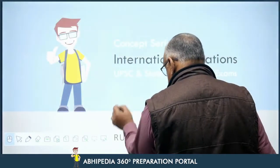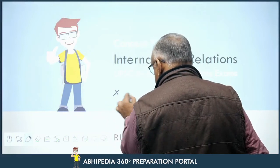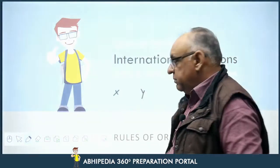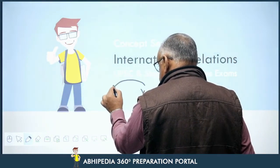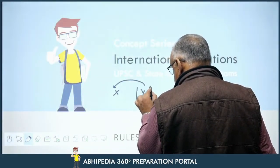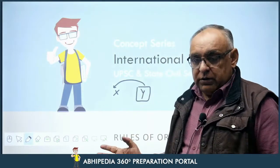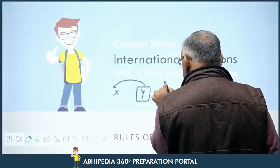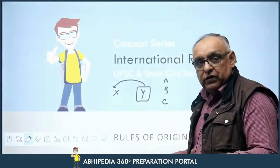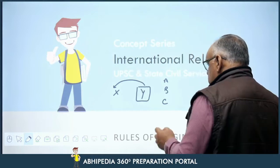Let's suppose there are two countries — country X and country Y. X and Y have entered into a Free Trade Agreement, which means Y country's exports to X country will not be subject to tariffs or duties. Now, X country has given this facility only for those goods which are being imported from Y country. Let's suppose there are some other countries — country A, country B, country C — and X country has no Free Trade Agreement or preferential trade agreement with these countries.